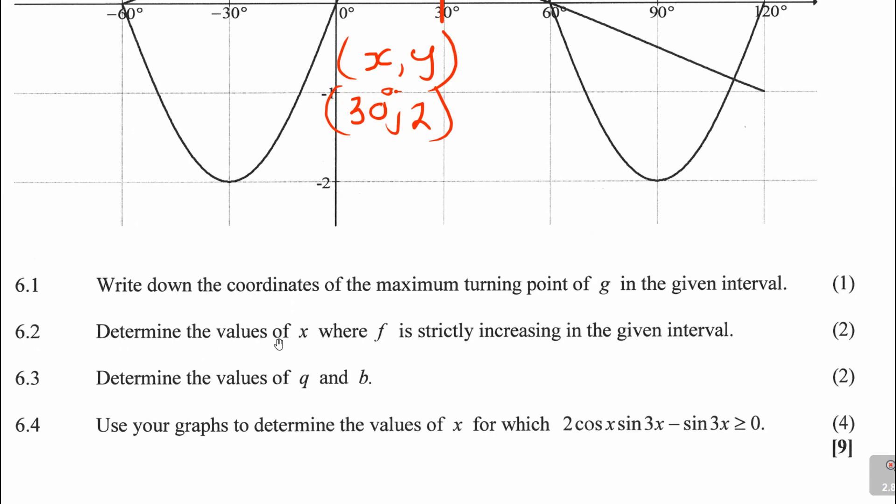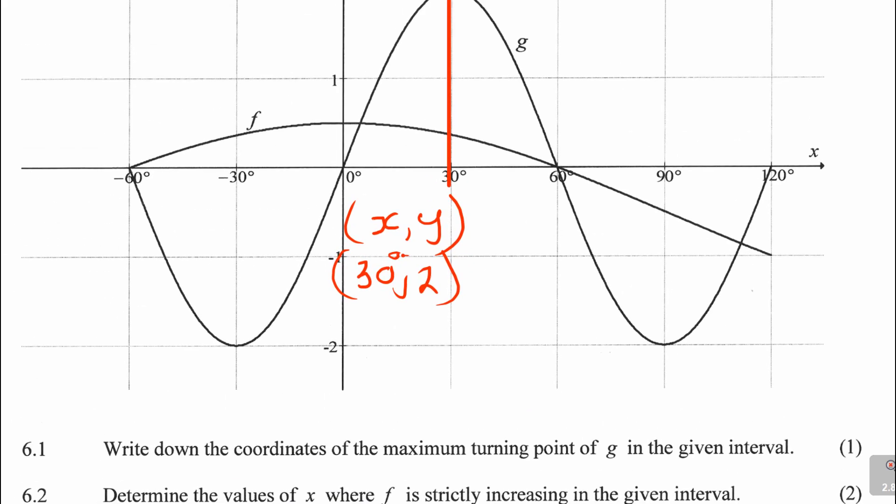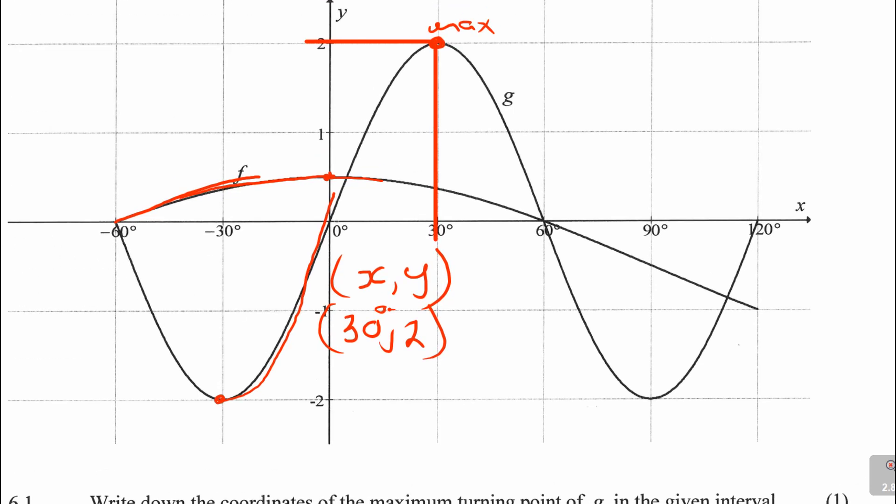Question 6.2: Determine the values of x where f is strictly increasing in the interval. The key part is strictly increasing. How do you know that a graph is increasing? For f, it's when the graph is going up. You see it starts going up, and then somewhere there it starts going down. That's what they mean when they say increasing graphs.